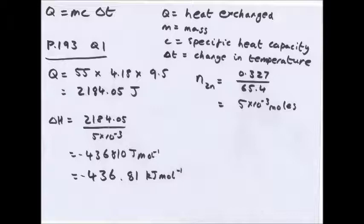Here's an example from page 193 of the OCR textbook, question 1: 0.327 g of zinc powder was added to 55 cm³ of aqueous copper sulfate at 22.8°C; the temperature rose to 32.3°C; aqueous copper sulfate is in excess. The equation is: Zn + CuSO₄ → ZnSO₄ + Cu (a 1:1 ratio). So q = m × c × ΔT = 55 × 4.18 × 9.5 = 2184.05 J. Since temperature increased, this is an exothermic reaction, so delta H will be negative. Note: delta H has a sign, q does not.